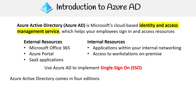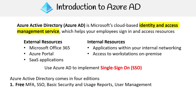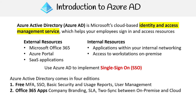Azure Active Directory comes in four editions. Each tier going up includes the features of the one before it. The free tier has MFA, SSO, basic security, usage reports, and user management. Then you have the Office 365 Apps tier, which revolves around that suite — it adds company branding and SLA sync between on-premise and cloud.